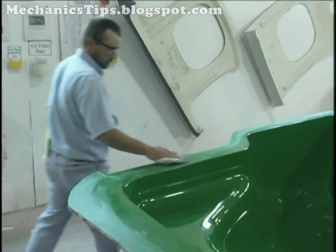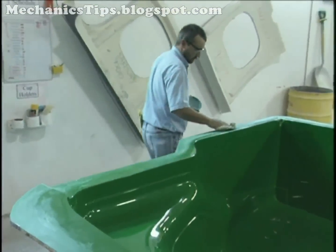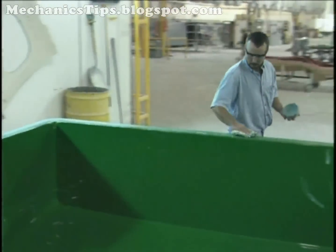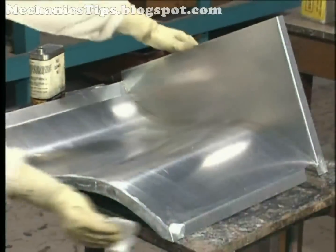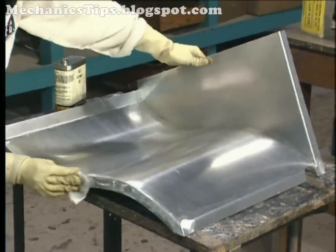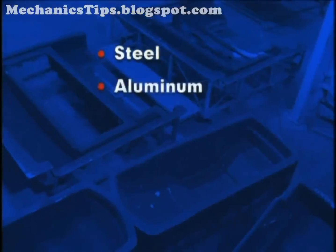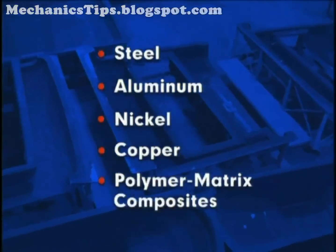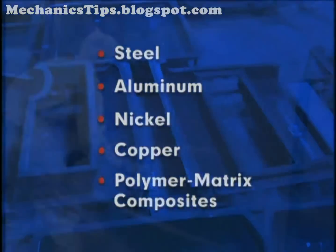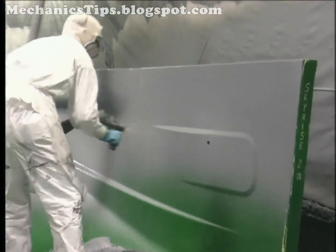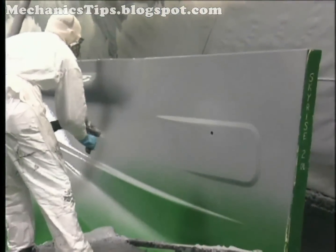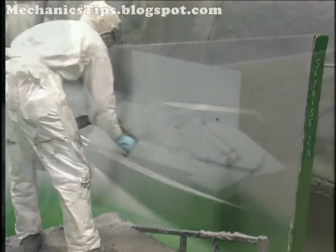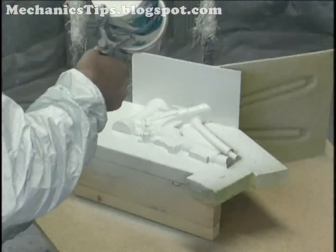A mold having the desired part shape is then coated with a release agent to permit subsequent part release. Composite manufacturing molds are commonly made of steel, aluminum, nickel, copper, or polymer matrix composites. Once coated with a release agent, a layer of resin called a gel coat may be applied to the mold and allowed to cure to a tacky state.